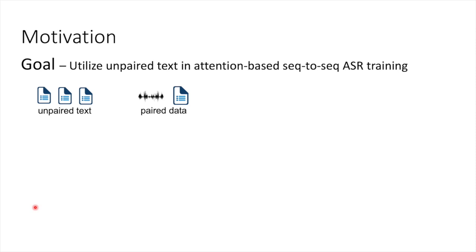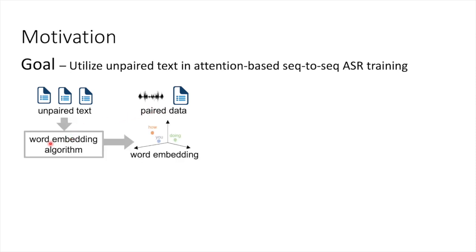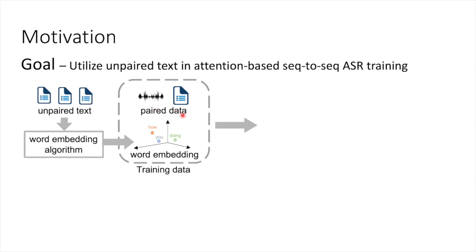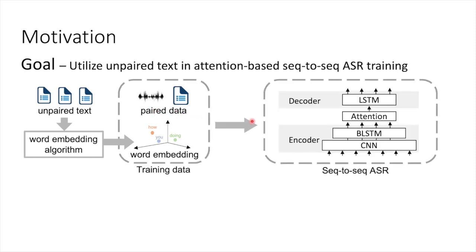I'll first talk about our motivation. Our goal is to utilize unpaired text in attention-based sequence-to-sequence ASR training. Unpaired text is generally easier to collect compared to audio and transcription pair data. So we take the unpaired text together with word embedding algorithms to obtain word embeddings, and then collect the pair data and word embeddings together as training data.